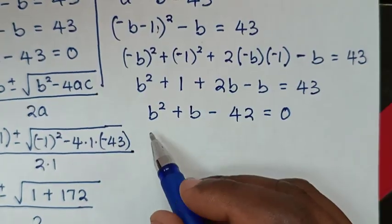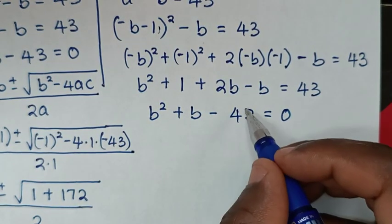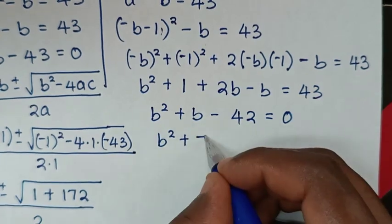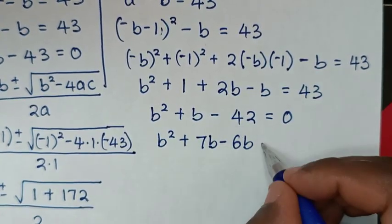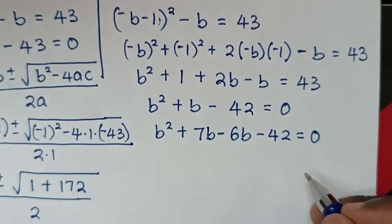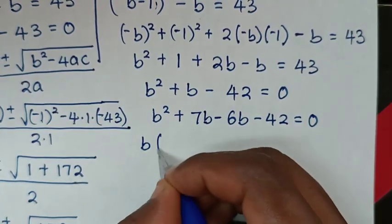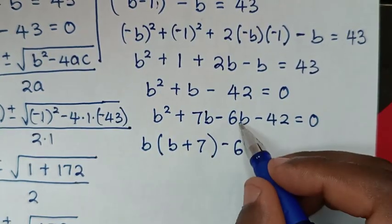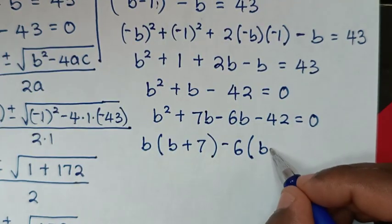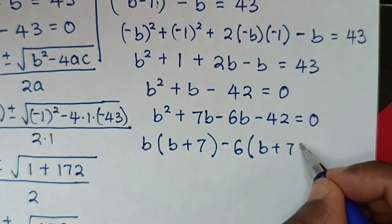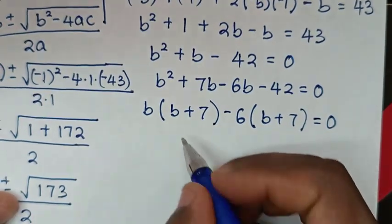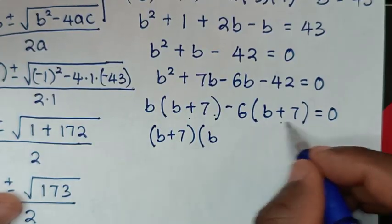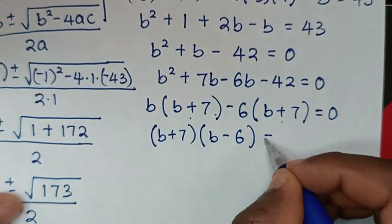This quadratic can be solved by grouping and factorization, because 42 equals 7 times 6. So b squared plus b minus 42 becomes b squared plus 7b minus 6b minus 42 equals 0. Grouping: b(b plus 7) minus 6(b plus 7) equals 0, which factors as (b plus 7)(b minus 6) equals 0.